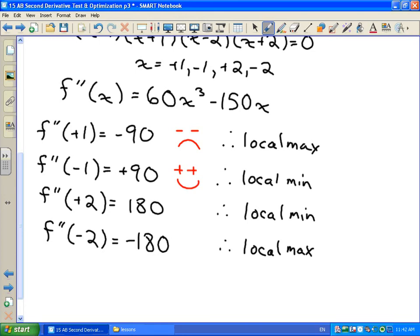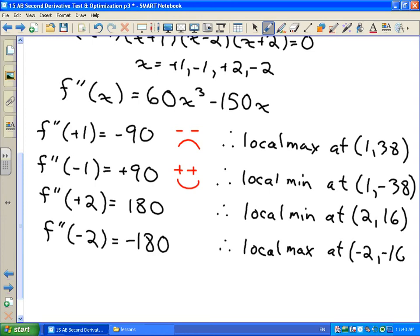And so in addition to doing this, you'd go back and you would figure out what the coordinates are for all of these points. So we've got a local maximum at 1, 38, and for x is positive 2 and x is negative 2, we've got local minimums at 2, 16 and negative 2, negative 16.